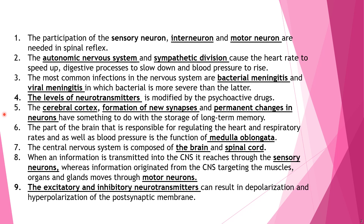Number six: the part of the brain responsible for regulating heart rate, respiratory rate, and blood pressure is the medulla oblongata — this is one of the most important terms in this review. Number seven: the central nervous system, or CNS, is composed of the brain and spinal cord.